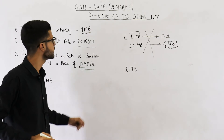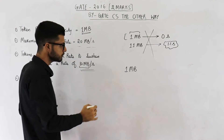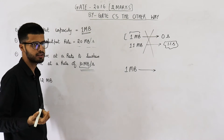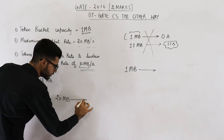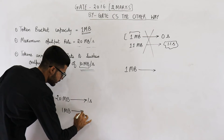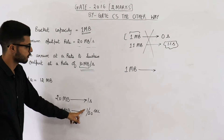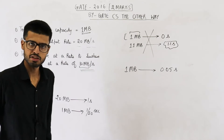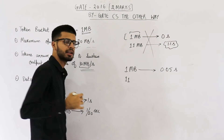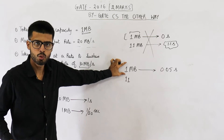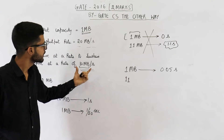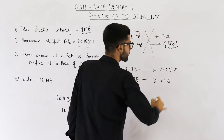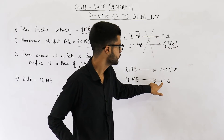First 1 MB of data can be sent at 20 MBPS because we have enough tokens. At 20 MBPS, 1 MB will require 1 divided by 20 seconds, which is 0.05 seconds. So 1 MB can be sent in this much time. The remaining 11 MBs need tokens, but tokens are already exhausted. So these 11 MBs can be sent at the same rate at which new tokens are being generated, which is 10 MBPS — taking 1.1 seconds. So the answer appears to be 0.05 plus 1.1, which is 1.105 seconds.